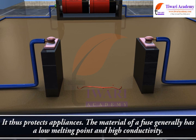The fuse protects appliances. The material of a fuse generally has a low melting point and high conductivity. Familiar domestic appliances include the electric iron, bread toaster, electric kettle, heater, and so on. Electric heating is also used in producing light, as in an incandescent bulb.